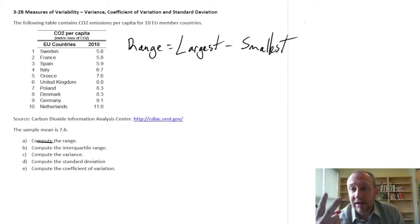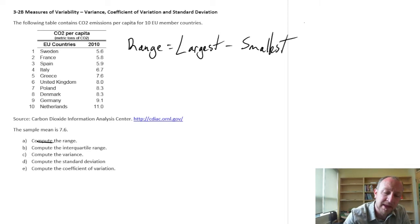We're only looking at two observations in that data set, the smallest and the largest, and taking the difference. So 11 minus 5.6, this is going to be 5.4.